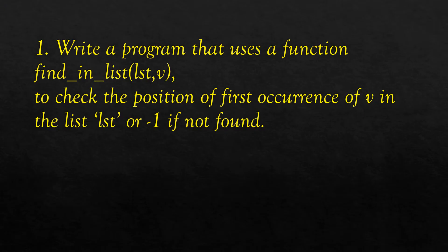The first program is to write a function called find_in_list having two parameters: one list and second is one item V. It will check the position of the first occurrence of the item V in the list LST and it will return minus 1 if not found.